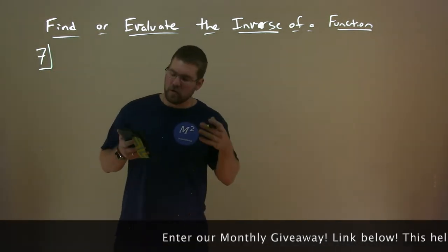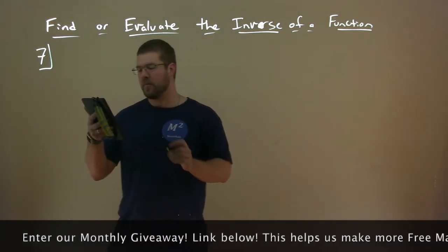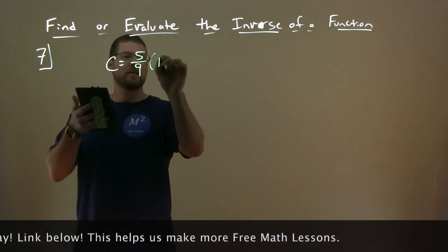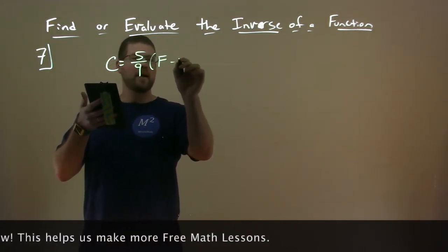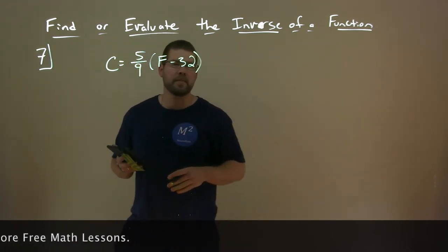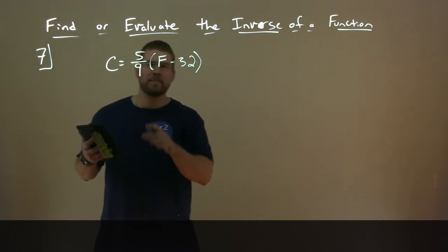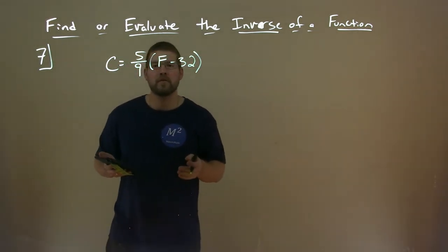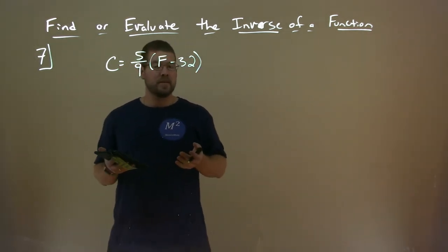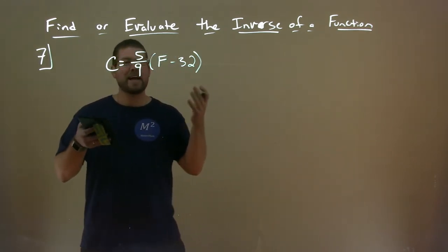Alright, so we're actually going to use a common formula that hopefully you know. C equals 5 ninths of F minus 32. If you know what that formula is, please let me know in the comment section below. This is a formula converting from Fahrenheit to Celsius. And this is a common thing that we see. Some countries use Fahrenheit for a temperature, some use Celsius, and there's a formula that helps you get there.